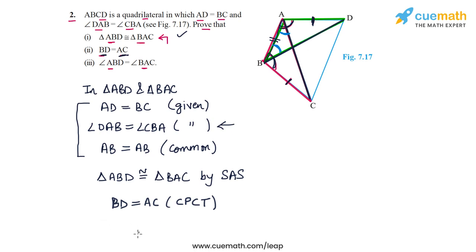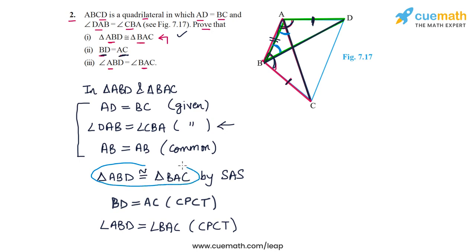Angle ABD is equal to angle BAC, once again using corresponding parts of congruent triangles. To summarize: the two triangles are congruent by the SAS congruence criterion, and hence both equalities — BD = AC and angle ABD = angle BAC — hold true by CPCT.